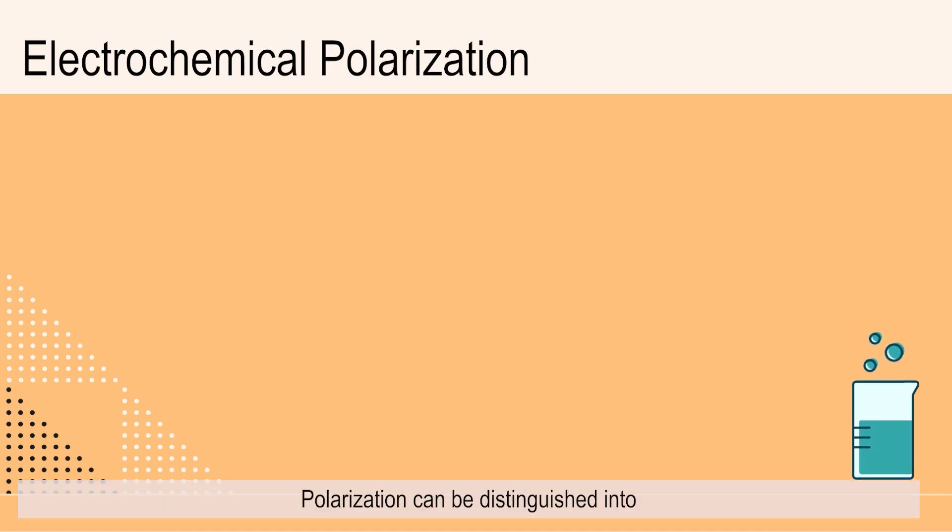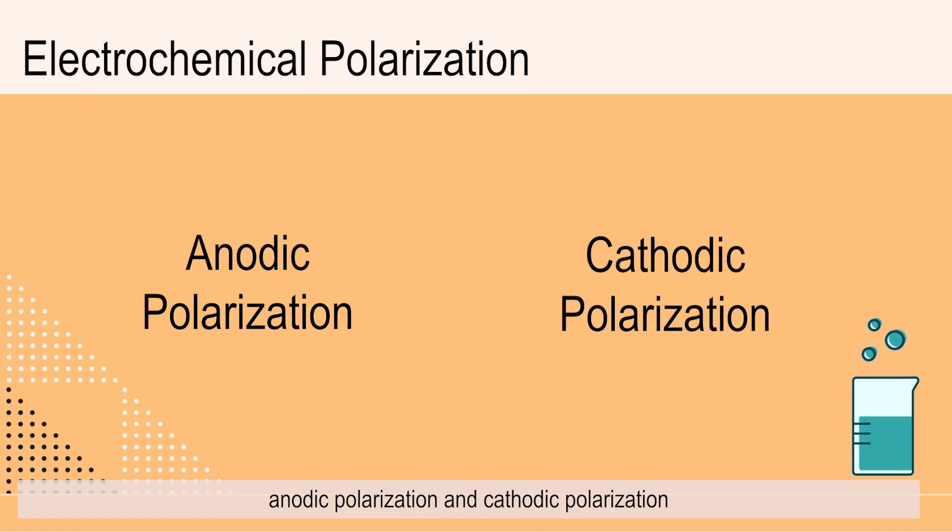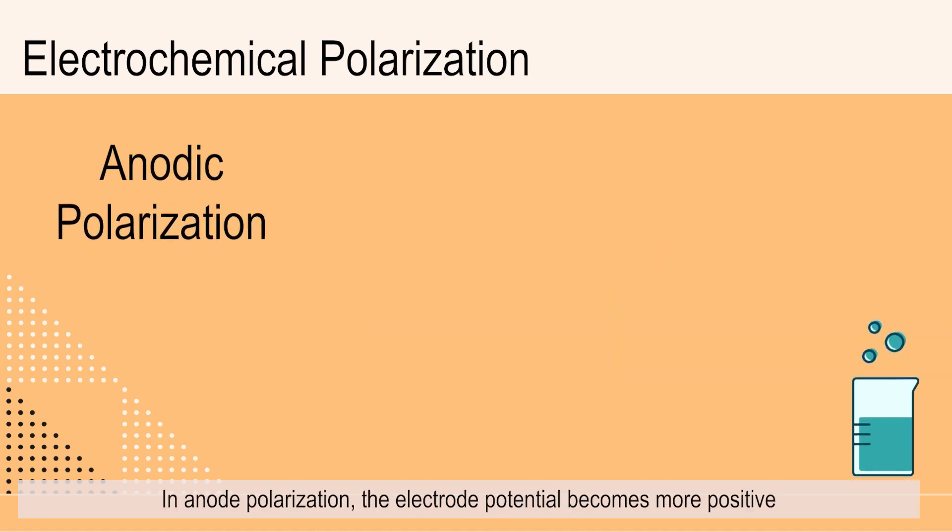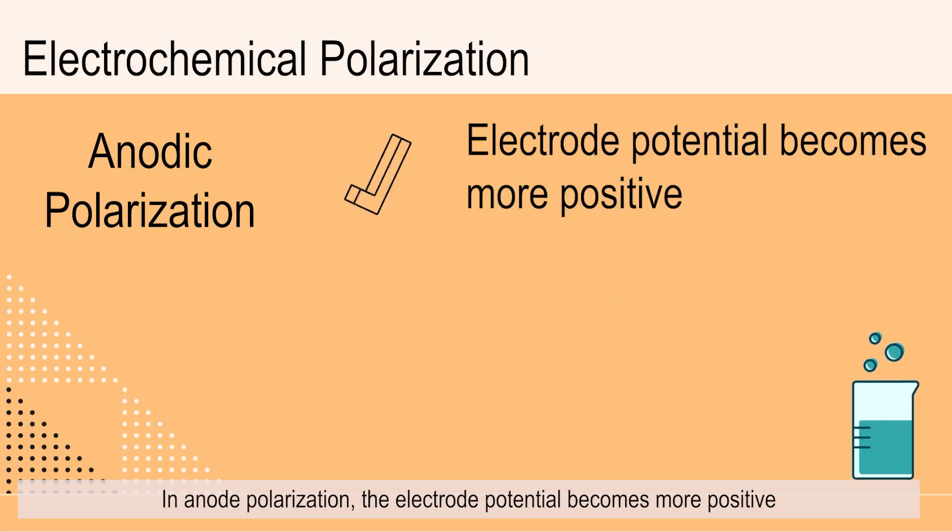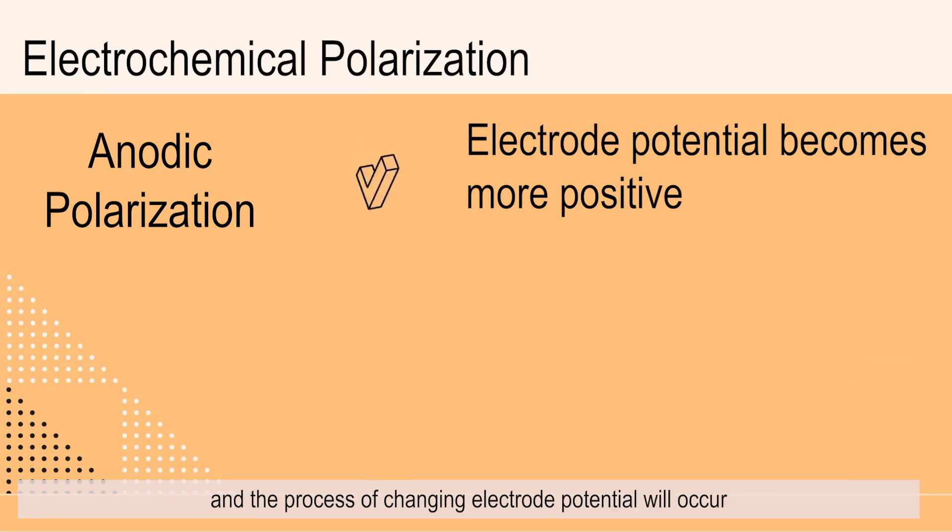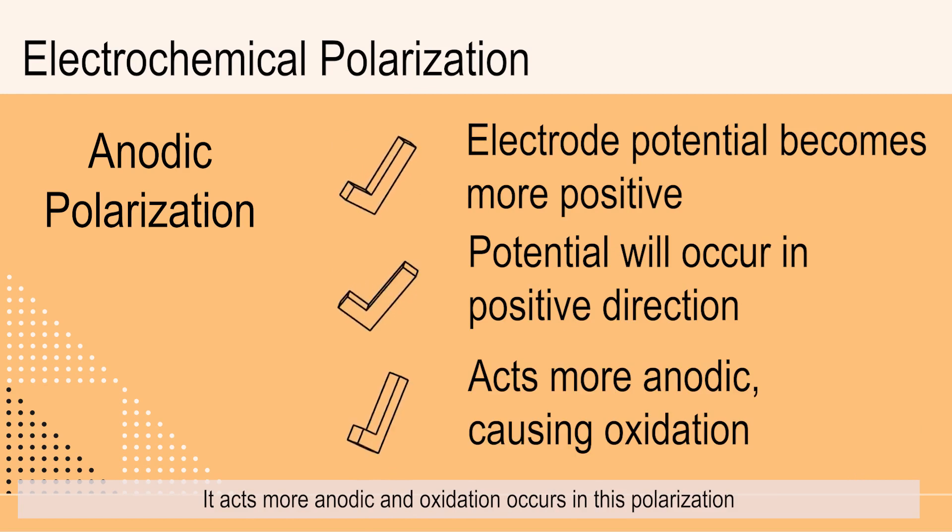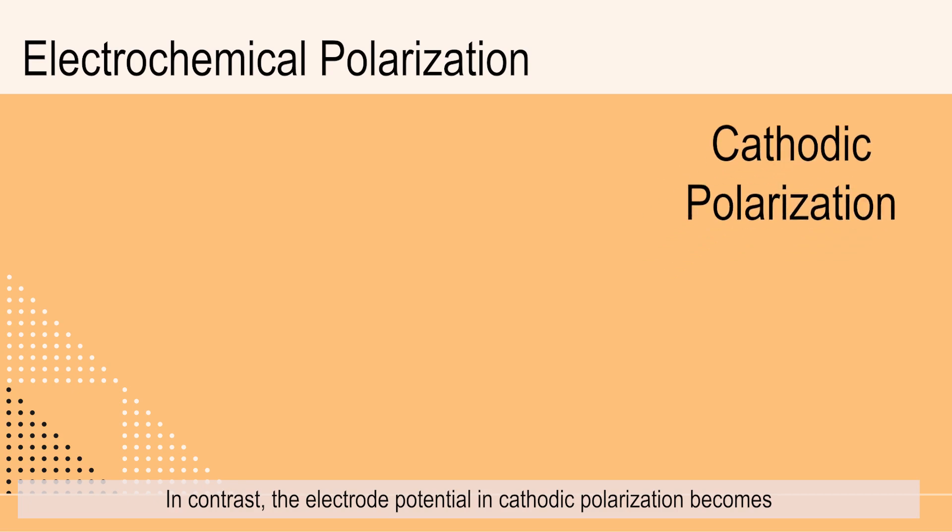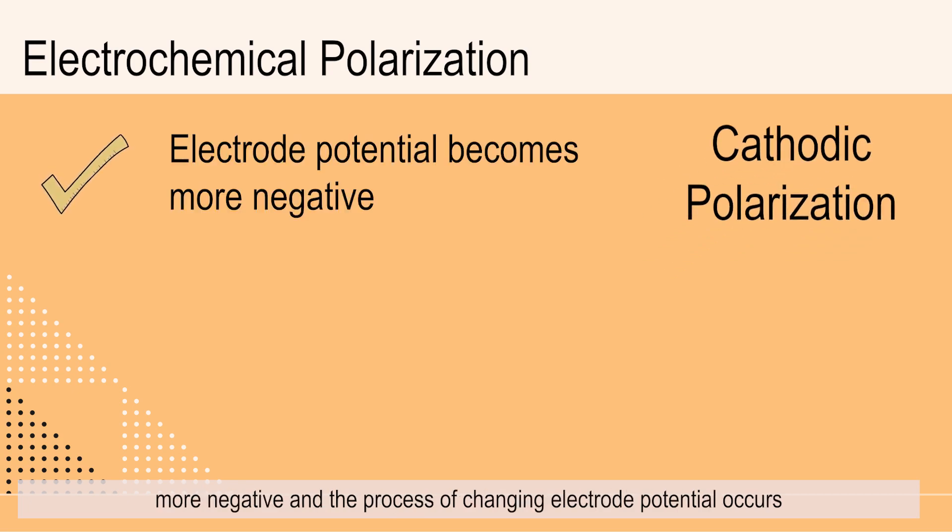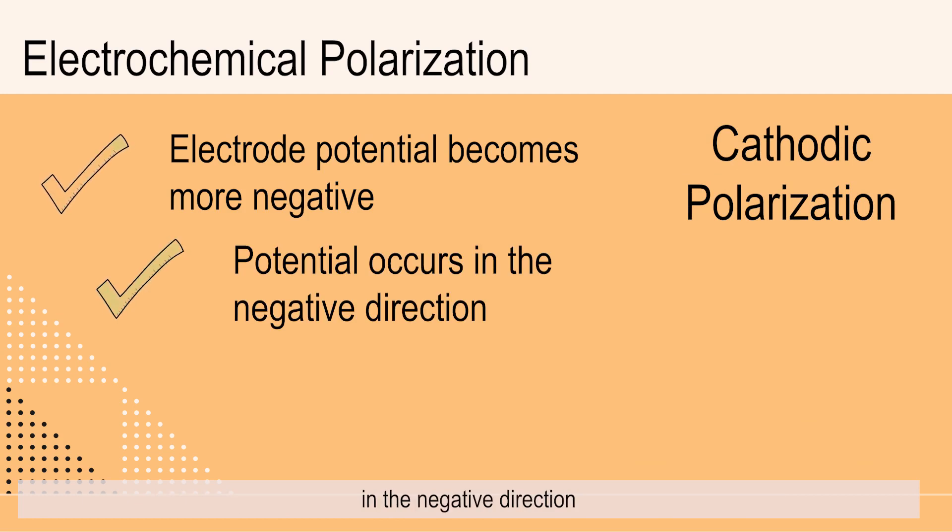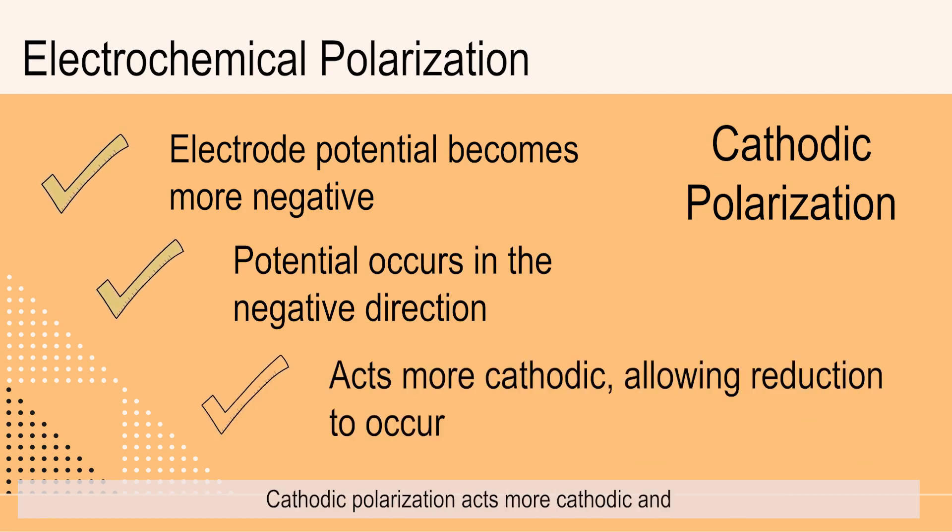Polarization can be distinguished into anodic polarization and cathodic polarization. In anode polarization, the electrode potential becomes more positive and the process of changing electrode potential will occur in positive direction. It acts more anodic and oxidation occurs in this polarization. In contrast, the electrode potential in cathodic polarization becomes more negative and the process of changing electrode potential occurs in the negative direction. Cathodic polarization acts more cathodic and reduction will occur in this polarization.